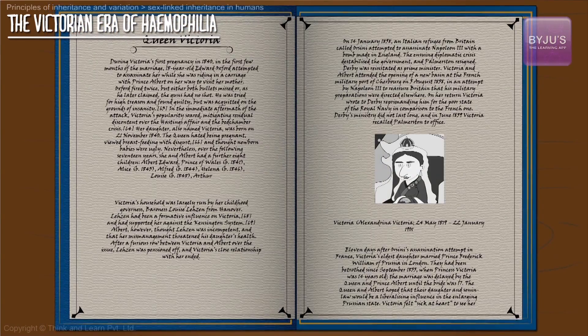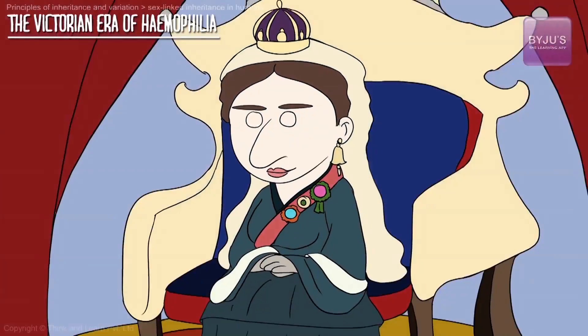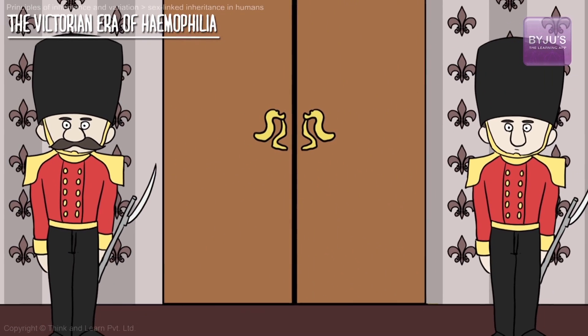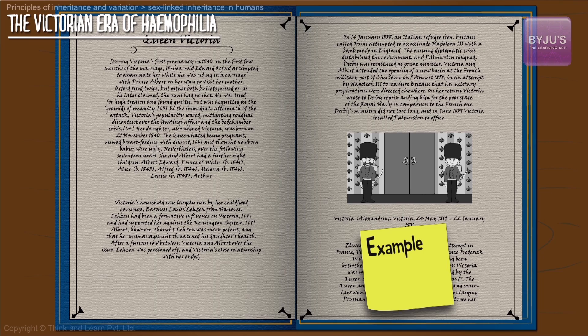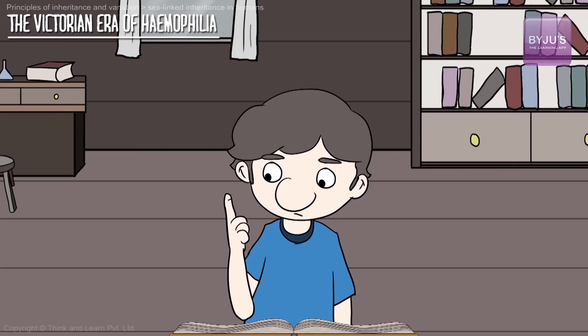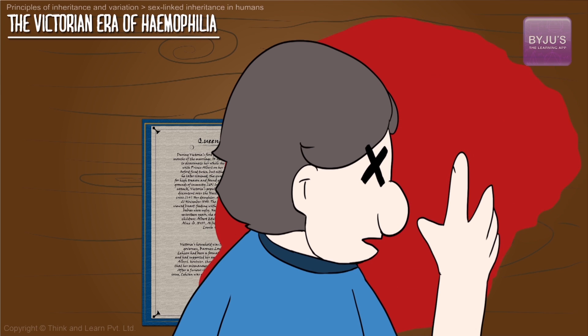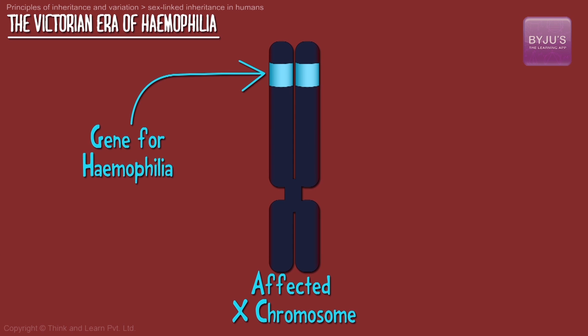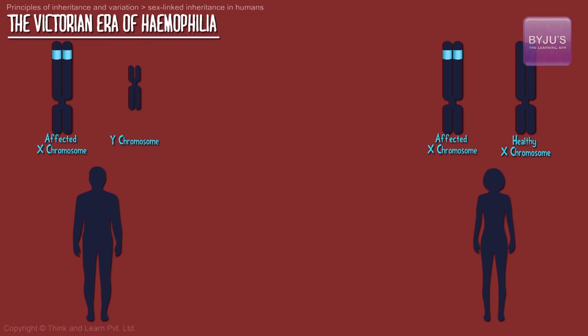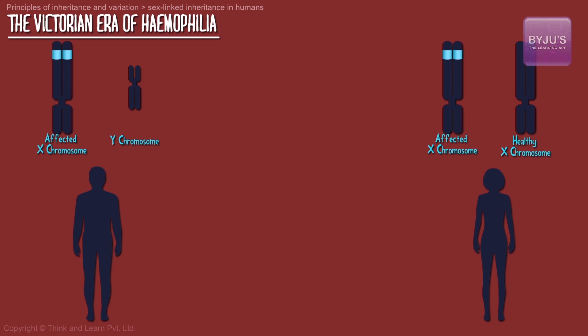If all of this still seems too complicated, let me take you down history. Let's go back to the Victorian era, the time of Queen Victoria's rule in England. She is the most famous example of hemophilia as a sex-linked disease. This is a disease in which the blood doesn't clot properly, and hence even a tiny injury can cause excessive loss of blood. It is caused by a recessive gene located on the X chromosome, which is why we call it an X-linked disease. Males are more affected than females, because females have an additional X chromosome which, if it's normal, can mask this disease.